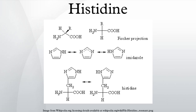Aromaticity: the imidazole ring of histidine is aromatic at all pH values. It contains six pi-electrons — four from two double bonds and two from a nitrogen lone pair. It can form pi-stacking interactions, but this is complicated by the positive charge. It does not absorb at 280 nm in either state, but does absorb in the lower UV range more than some amino acids.